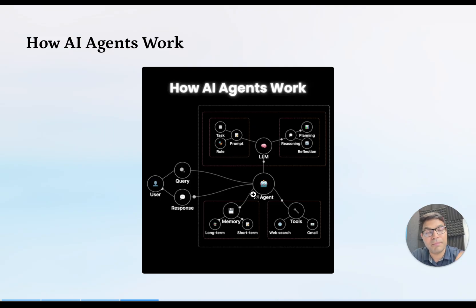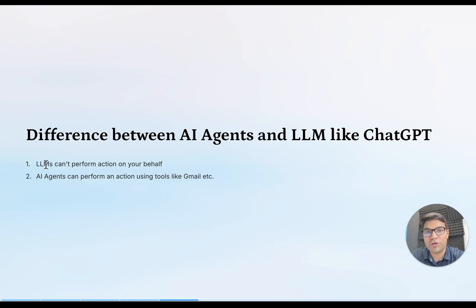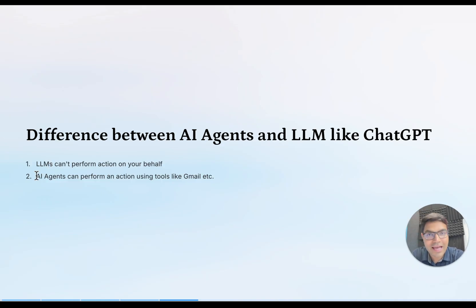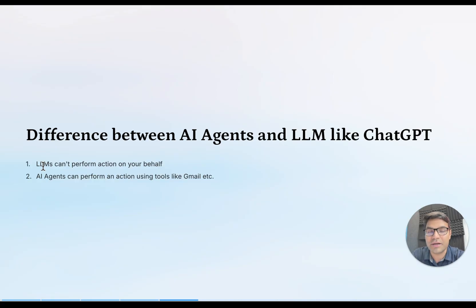This is how an AI agent works — exactly like a human, but at much faster speed with no emotions and no excuses. There is a lot of confusion between AI agents and large language models. A large language model like ChatGPT can draft an email, but it won't be able to send that email on your behalf to a thousand customers. An AI agent will: it uses the large language model to draft, then uses tools to send. AI agents have the power to take action on your behalf, which large language models like ChatGPT, Google Gemini, and Claude cannot do.